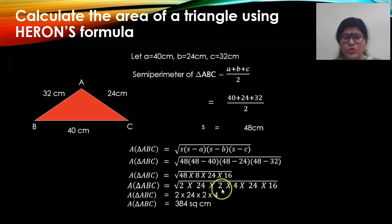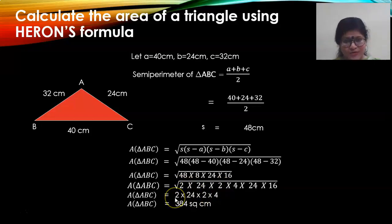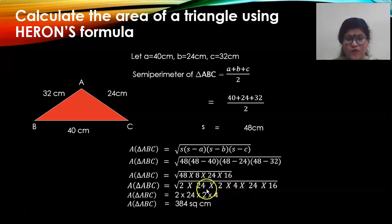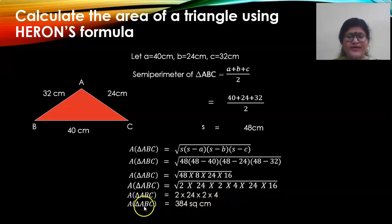Square root of 2 into square root of 2 is 2, so one 2 comes out. Then root 24 into root 24 — another 24 comes out. Then square root of 4 is 2, and square root of 16 is 4. Multiply these four numbers and you get the area of triangle ABC equal to 384 square centimeters.